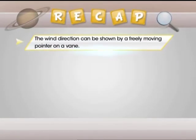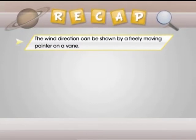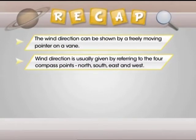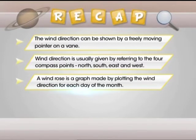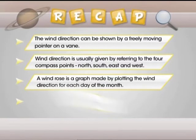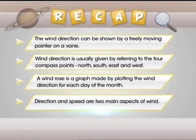The wind direction can be shown by a freely moving pointer on a wind vane — if the wind is blowing from the east, the pointer will point to the east. Wind direction is usually given by referring to the four compass points: north, south, east, and west. A wind rose is a graph made by plotting the wind direction for each day of the month.